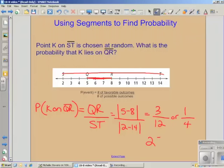You can also put it as a percent. One-fourth we know is twenty-five percent. So the probability that K is on segment QR is one-fourth or twenty-five percent.